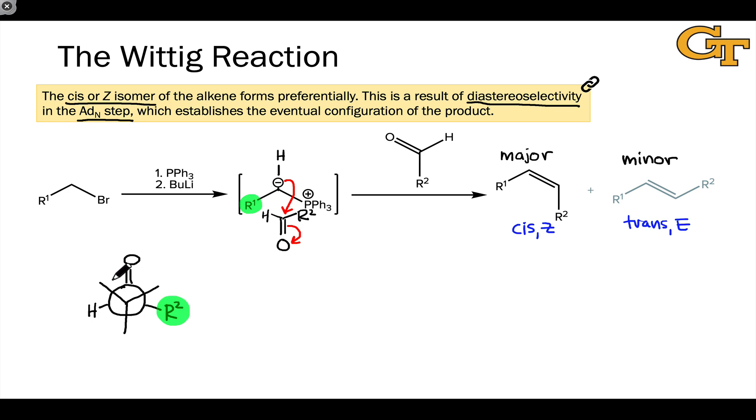Well, if R1 and R2 are relatively large, it's likely that they'll prefer to be anti or across from one another in the most stable transition state for this addition step. This places the phosphorus group, PPh3+, anti to the carbonyl oxygen.